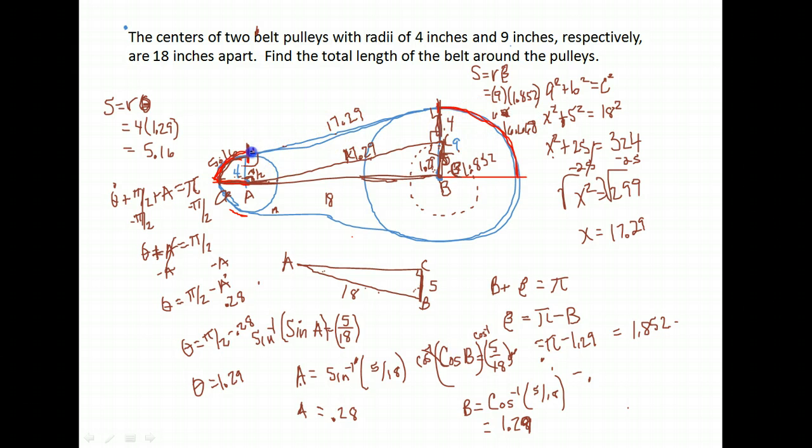So we now have all the parts we needed. Remember, we were trying to find the top half here. We found this arc length, we found the straight distance from here to here, and then this arc length also.